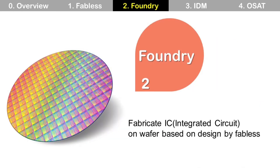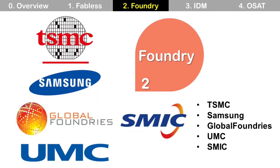Foundry companies fabricate the IC on a wafer based on the design by fabless companies. TSMC, Samsung, GlobalFoundries, UMC, and SMIC are the top Foundry companies.